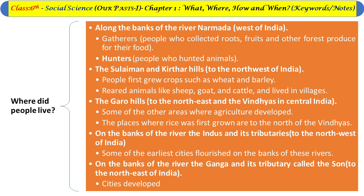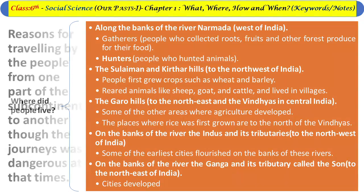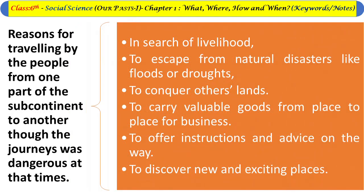At the Garo Hills and some other areas, agriculture also developed. The places where rice was first grown are to the north of the Vindhyas, on the banks of the river Ganga and its tributaries. Some of the earliest cities flourished on the banks of the Indus and its tributaries. On the banks of the Ganga and its tributaries, cities also developed later.